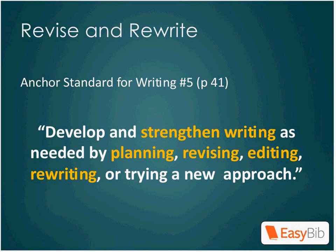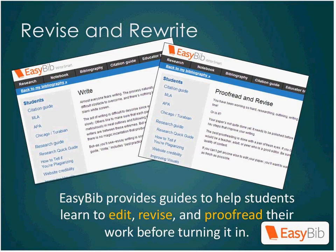Writing standard number five requires that students develop and strengthen writing as needed by planning, revising, editing, rewriting, or trying an entirely new approach. Students should be taught to properly review their writing to avoid typos and grammatical errors, but also to improve the syntax of their paper. During the revision process, they should also think about strengthening the argument and approach to their writing. EasyBib's Notebook can certainly help students better plan out their ideas before they start, but we also provide online guides for students to help them learn to effectively proofread, edit, and revise their writing.